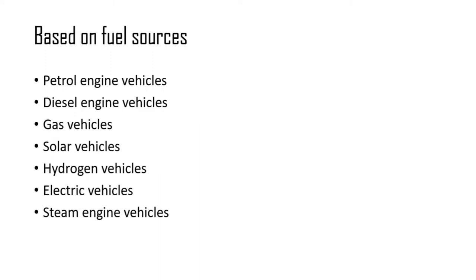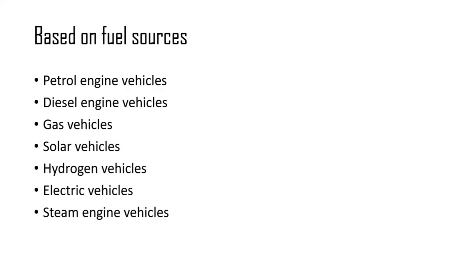Based on fuel sources, we can classify automobiles as petrol engine vehicles, diesel engine vehicles, gas vehicles, solar vehicles, hydrogen vehicles, electric vehicles, and steam engine vehicles. Steam engine vehicles are basically obsolete now. We are currently focusing on petrol and diesel engines, but the future vehicles will be electric vehicles and solar vehicles.